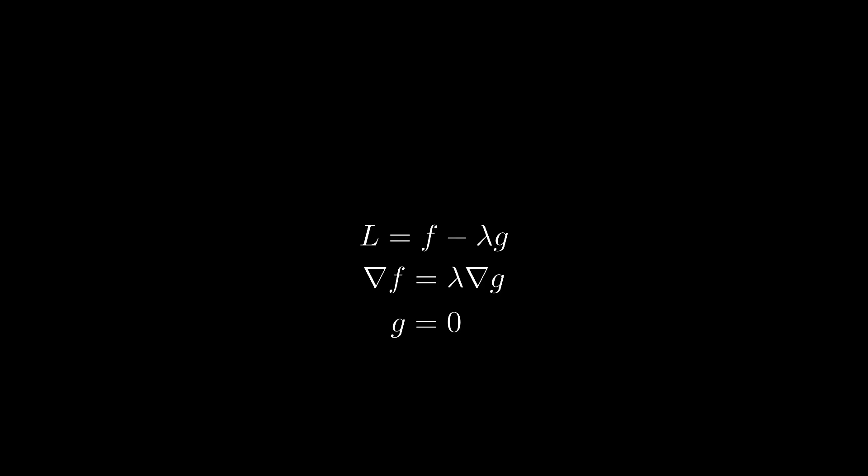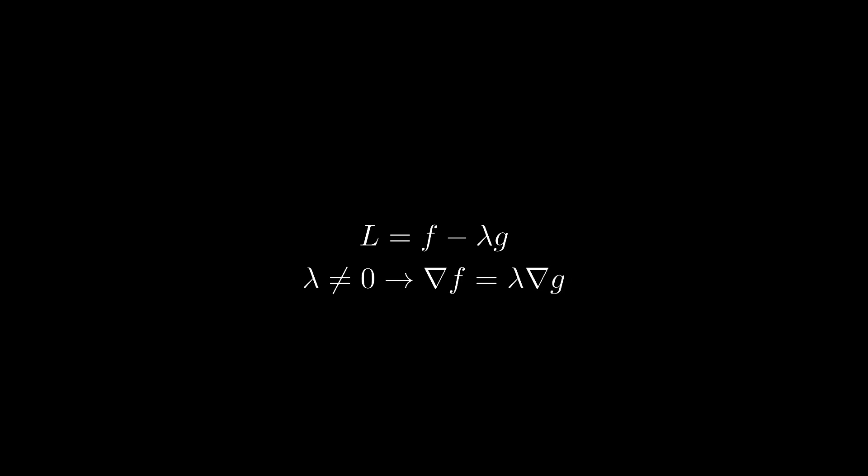So doing a free optimization on L gives us exactly the condition that the gradients need to be pointing along the same line, and that we're going to be on the shell where g equals 0. This system of equations has solutions that are both kinds of extrema we talked about. For extrema of the first kind — an honest-to-goodness stationary point of f that happens to be on g equals 0 — this occurs when lambda equals 0, so L is just equal to f. When lambda is not equal to 0, the gradient of f points in the same direction as the gradient of g, and that final condition enforces that g equals 0.